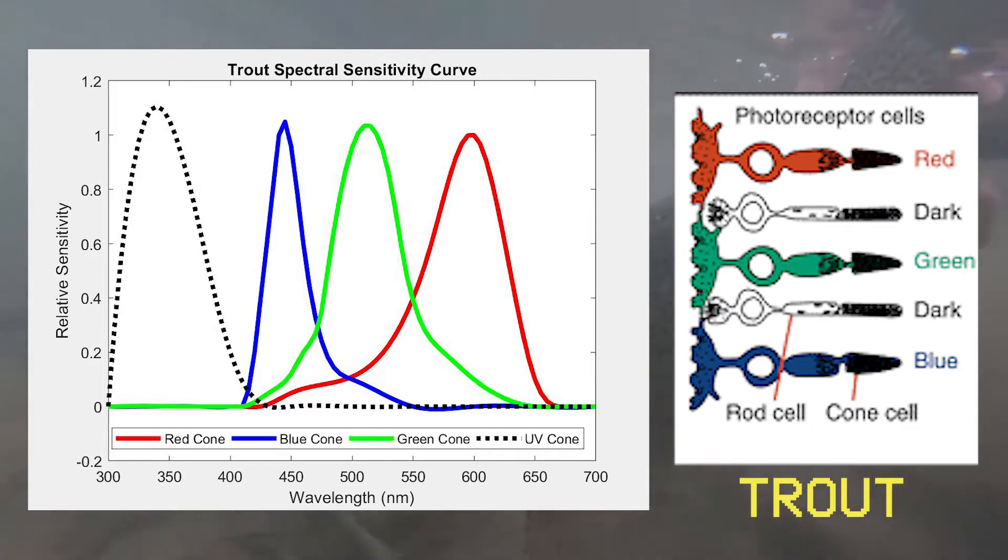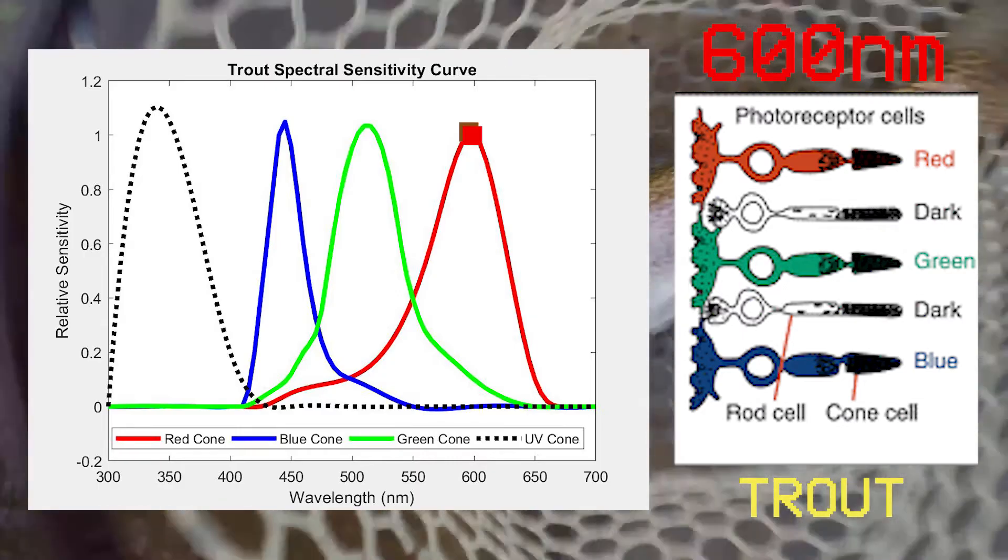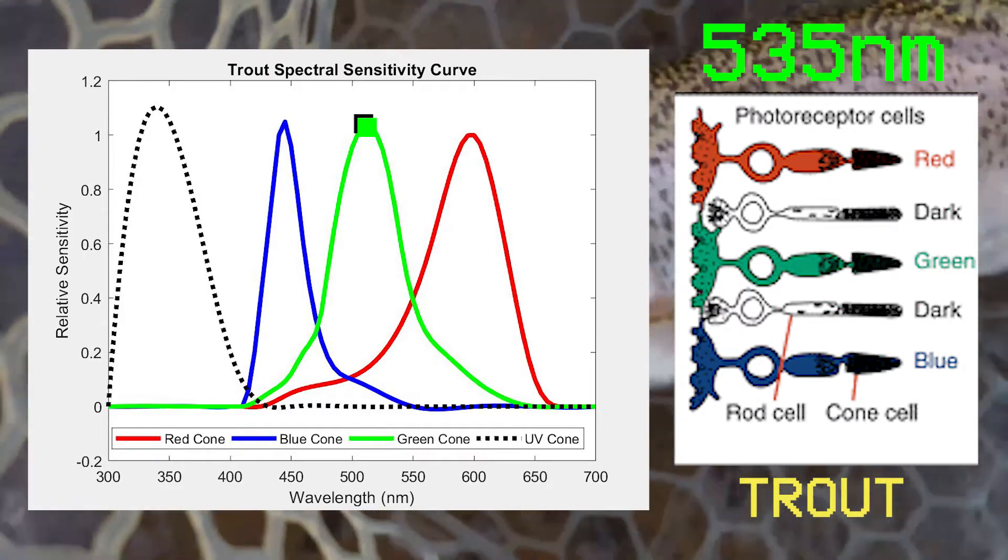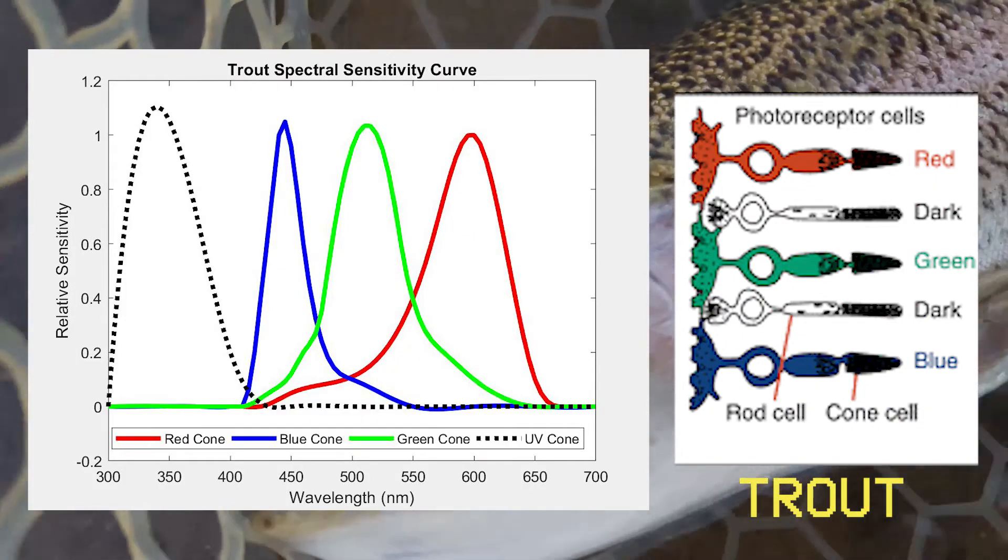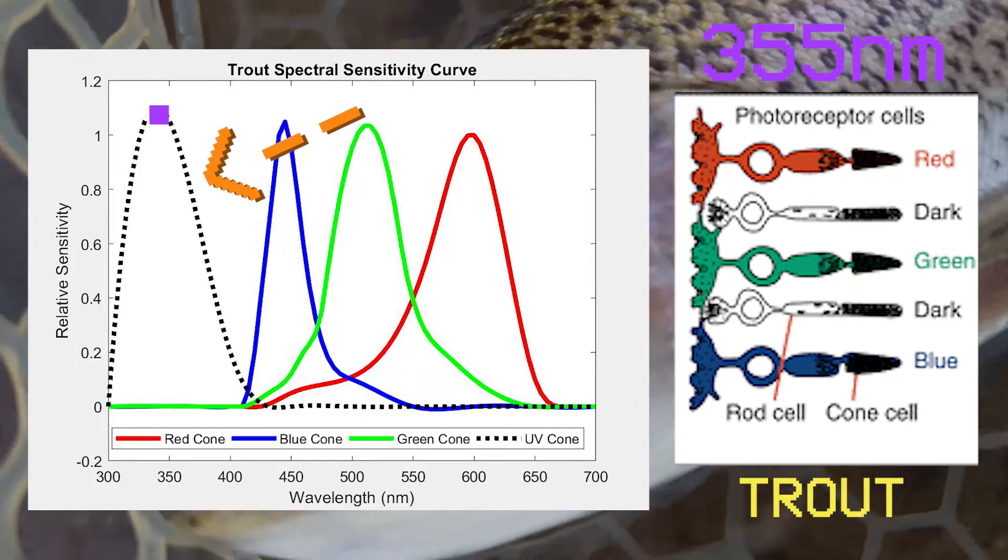An image showing the peaks and sensitivity of each of the four cones within a brown trout eye displays that the peak for red is around 600 nanometers, green and blue are the same at 535 and 440 nanometers, respectively, and UV exists around 355 nanometers.